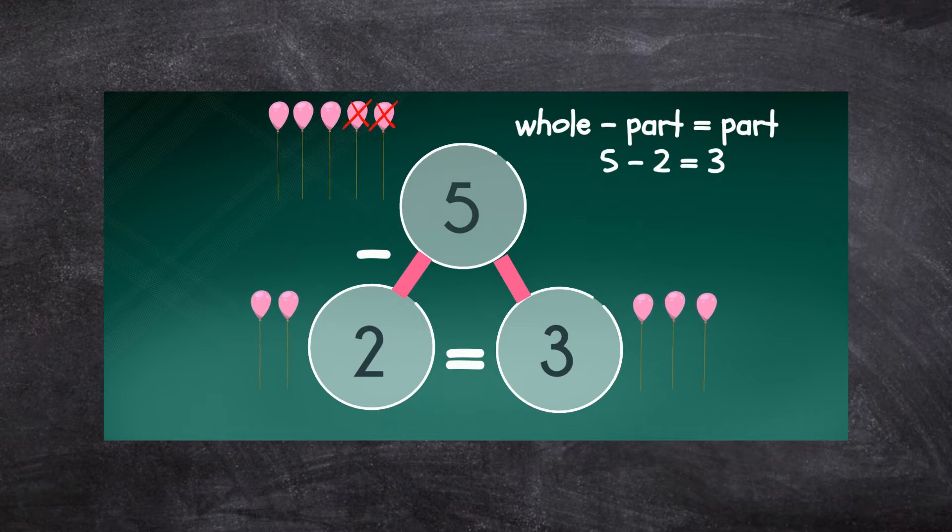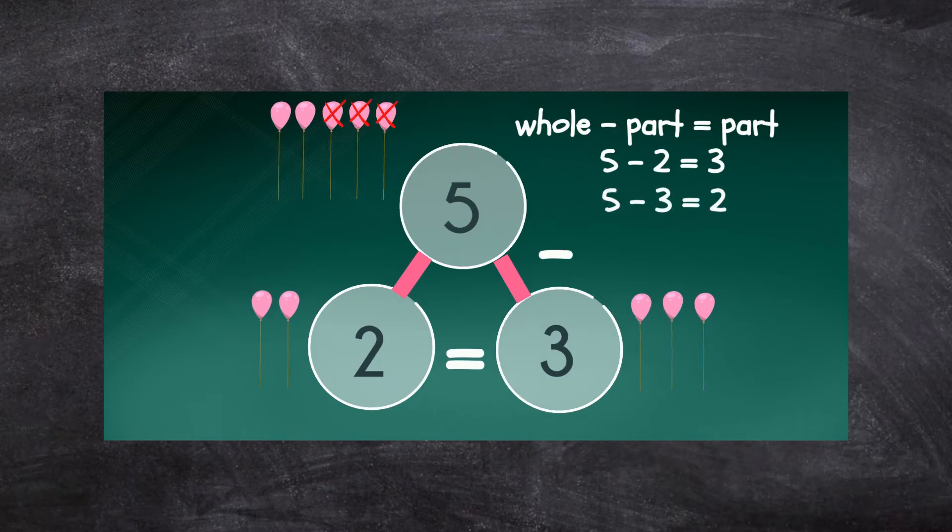We can also switch the parts around: 5 - 3 = 2. I'm going to show you how to do subtraction using a part-part-whole model.